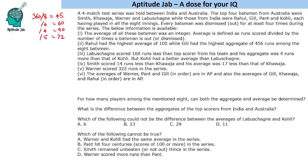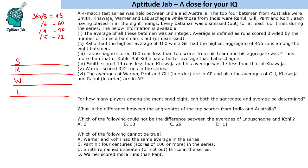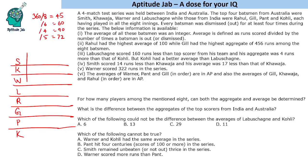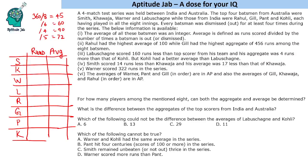Let's make a table of all these players and find their runs and average. From Australia we have Smith, Khwaja, Warner, and Labuschen. From India we have Rahul, Gil, Pant, and Kohli. We will find two things: total runs and the average. The first clue says Rahul had the highest average of 100, and Gil had the highest aggregate of 456.